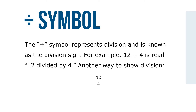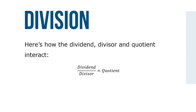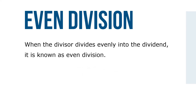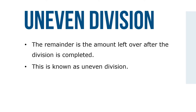The division symbol represents division and is known as the division sign. For example, 12 divided by 4 can be expressed in multiple ways. To actually solve the division, we use the division bracket sign. Here is how the dividend, divisor, and quotient interact: the dividend over the divisor equals the quotient. When the divisor divides evenly into the dividend, it is known as even division. When the divisor does not divide evenly into the dividend, the answer becomes a quotient plus a remainder. The remainder is the amount left over after the division is completed. This is known as uneven division.